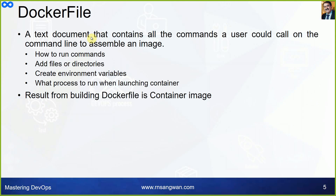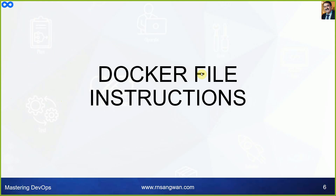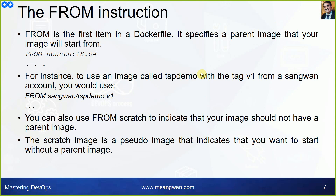The Dockerfile is the important document here. It is a text document that contains all the commands a user could call on the command line to assemble an image — how to run commands, add files or directories, create environment variables, and what processes to run when launching a container. The result of building a Dockerfile is the image. The FROM instruction is the first instruction in the Dockerfile.